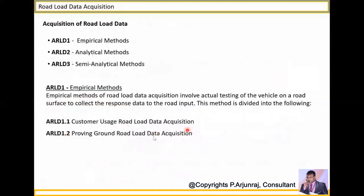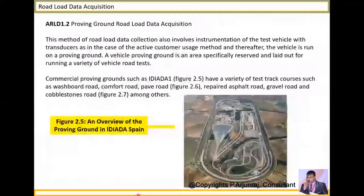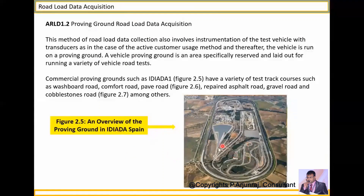Based on customer usage road load data and proving ground road load data, you collect all these details and can use transducers and actuators. Proving ground road load data acquisition involves testing on a ground with different road types: paved road, gravel road, cobblestone road, and roads for comfort or parallel road conditions. This is an overview of how different types of testing are done on a proving ground.